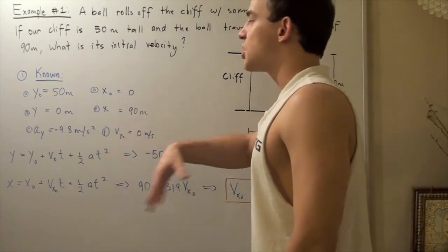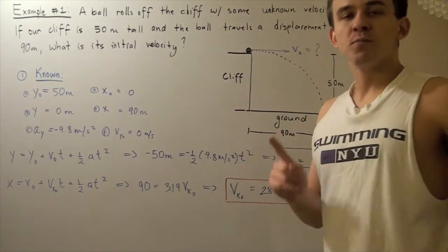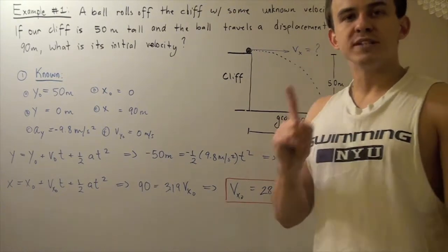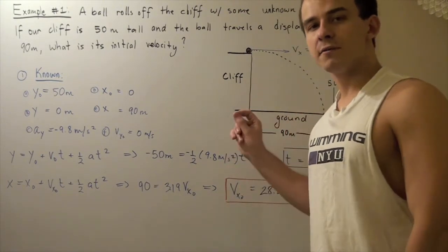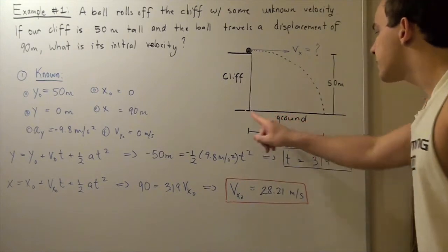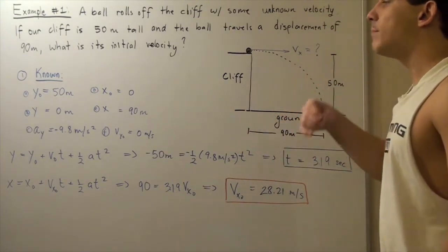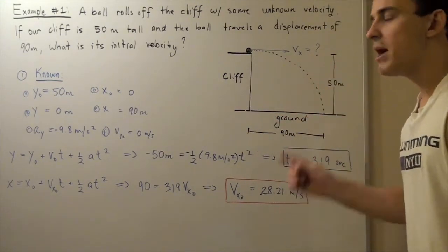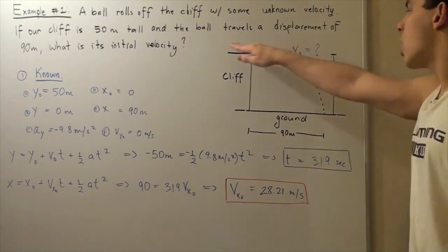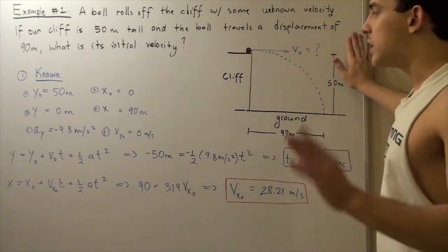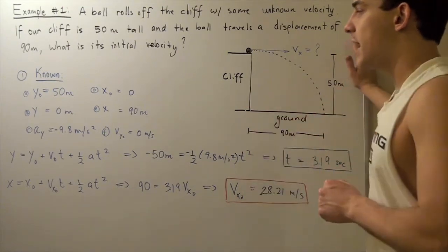Knowing all this, how will we find our answer? We first must find the time that our ball spends in the air. Then we can take our displacement in the x-direction, divide that by the time, and we'll find our initial horizontal velocity. So let's first find the time that our ball spends in the air.